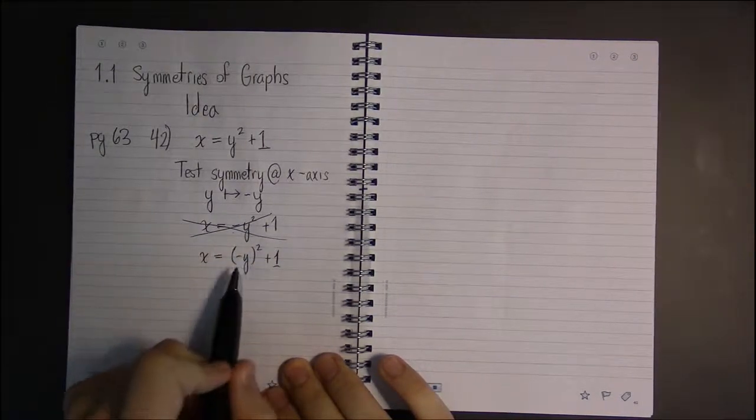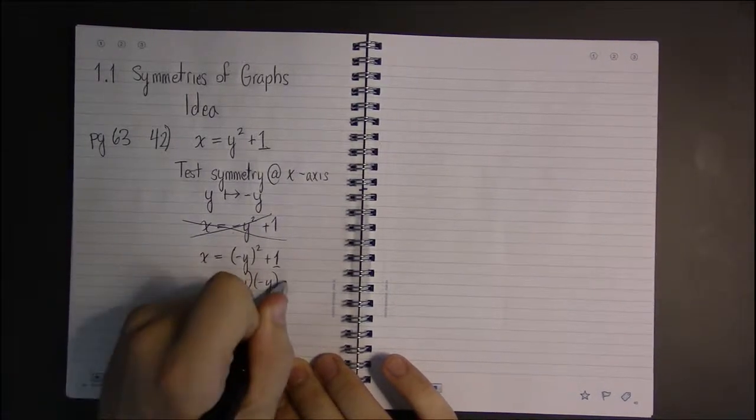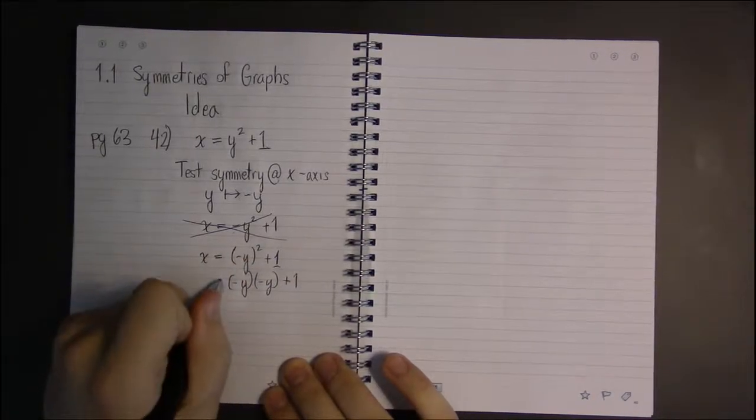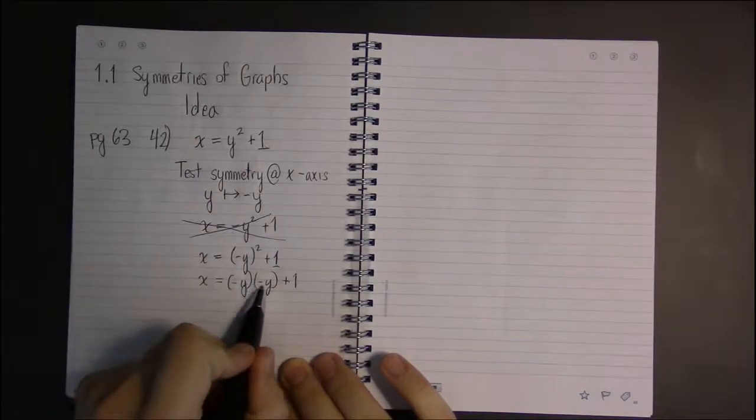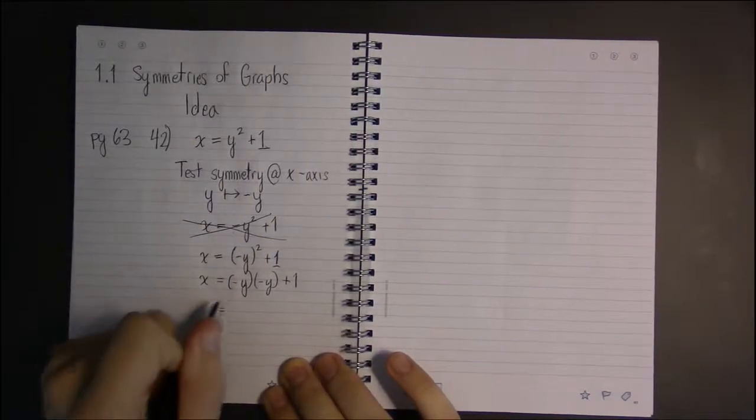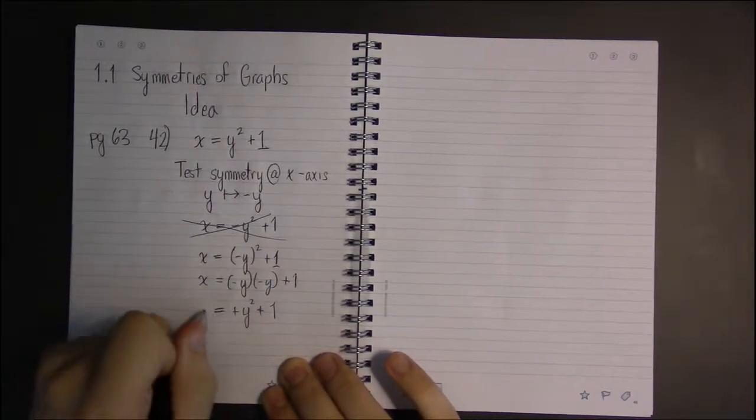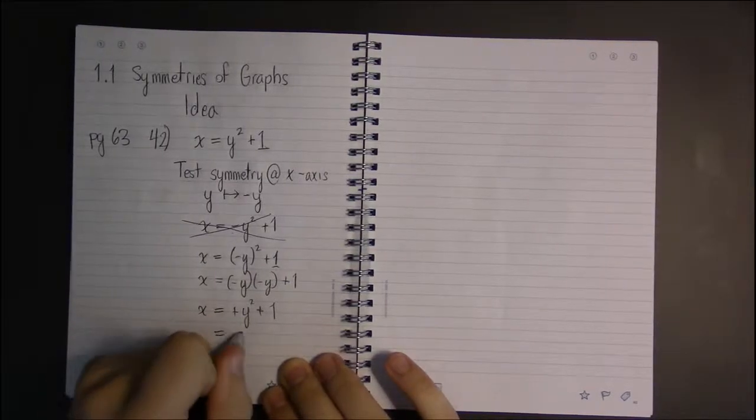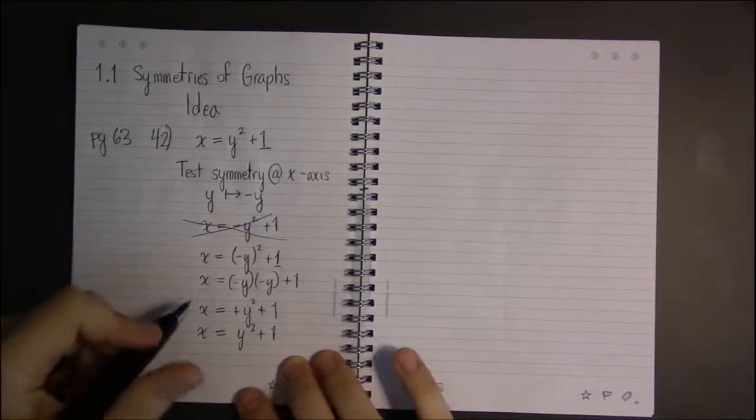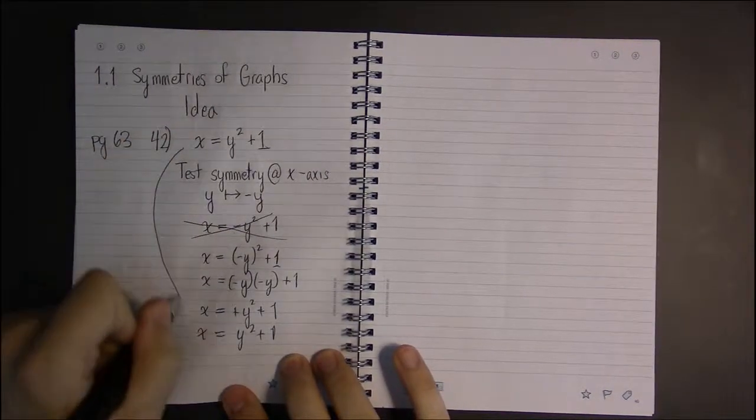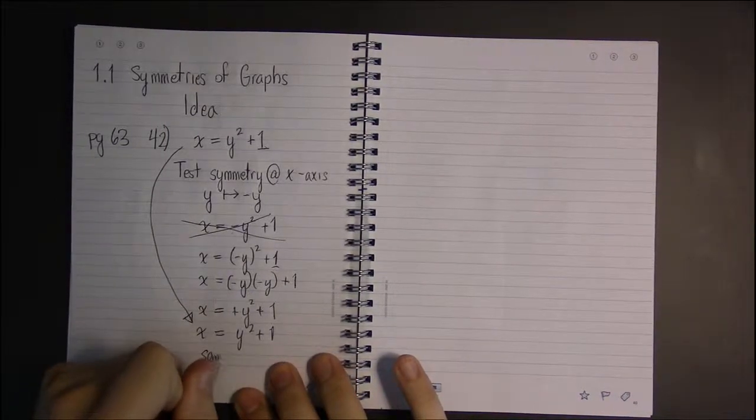Minus y squared is just minus y times minus y—that's what squaring does. It takes something and multiplies it by itself. So the minus times a minus leaves us with plus y squared. We write it as y squared plus one, and we actually ended up with the exact same thing as the original equation.